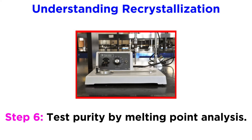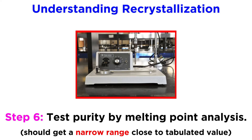We can test their purity by performing melting point analysis, and comparing the melting point range to tabulated values for pure compounds. A narrow melting point range very close to the tabulated value indicates a high degree of purity, whereas a wider range, or a less accurate range, indicates that impurities still persist.